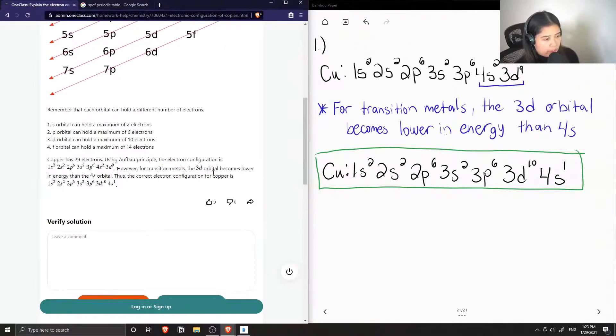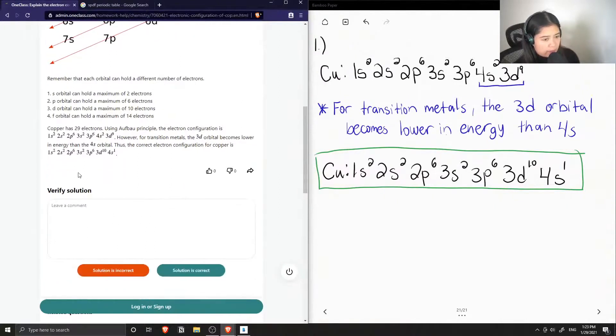However, for transition metals, the 3D orbital becomes lower in energy than the 4S orbital. Thus, the correct electron configuration for copper is the following. So it ends off with 3D10 and then 4S1. Yep, so this solution is correct.